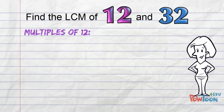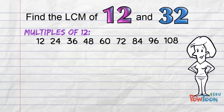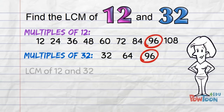So multiples of 12: 12, 24, 36, 48, 60, 72, 84, 96, 108. And for 32: 32, 64, and 96. The LCM is 96.